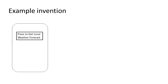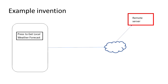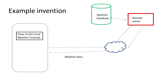Here's my phone with my weather button on it. When I press the button, my phone makes a query out to the internet, reaches the remote server, calls a function on that server, that server then reaches out to some database of weather information, and that data is returned and displayed on the phone. This is not a real invention — we are just using this as an example to illustrate the point about humans in the claims.